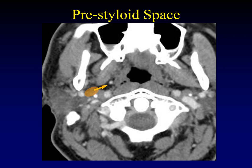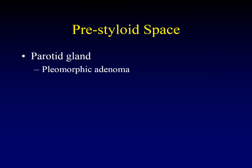Our last space going around the circle is the pre-styloid parapharyngeal space. Masses that arise in the pre-styloid space displace the parapharyngeal fat predominantly medially and maybe a little bit anteriorly. Masses that arise in this location have arisen from the deep lobe of the parotid — that's what normally lives here. Some people prefer to call this the parotid space; I like the more descriptive term pre-styloid space because it tells me where to find it, right in front of the styloid. We therefore expect salivary neoplasms to be the lesions found here.